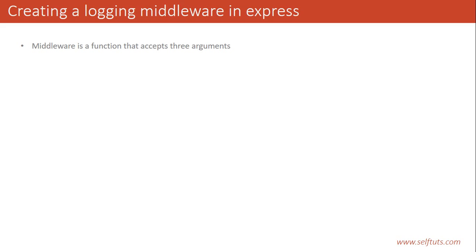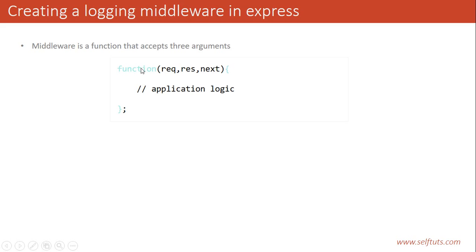Middleware is a function that accepts three arguments, which we have seen in previous videos. You need to keep in mind that middleware is a function that accepts three arguments: the first one is the request, the second one is the response, and the third one is next. This is the signature of a middleware function.